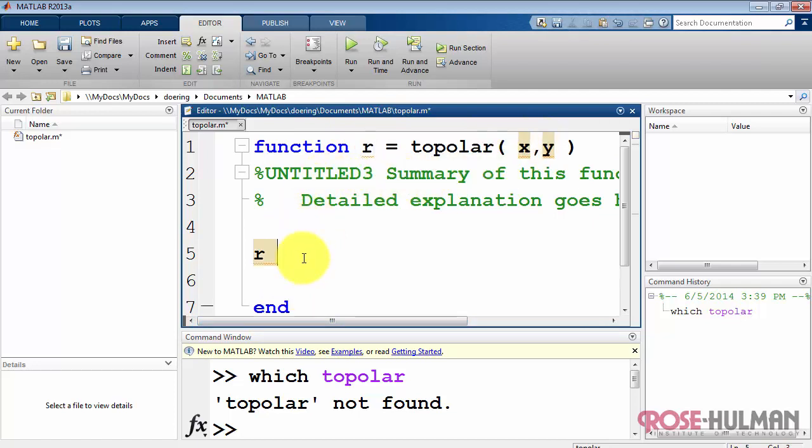The fundamental calculation happening inside the function is R equals square root of X squared plus Y squared. And this is calculating the radius, or the magnitude, of that pair of values in rectangular coordinates.